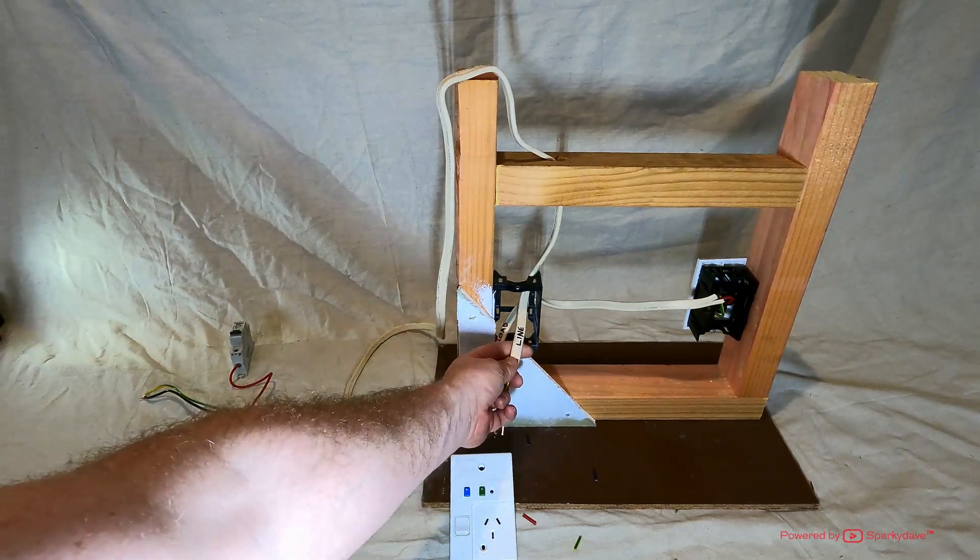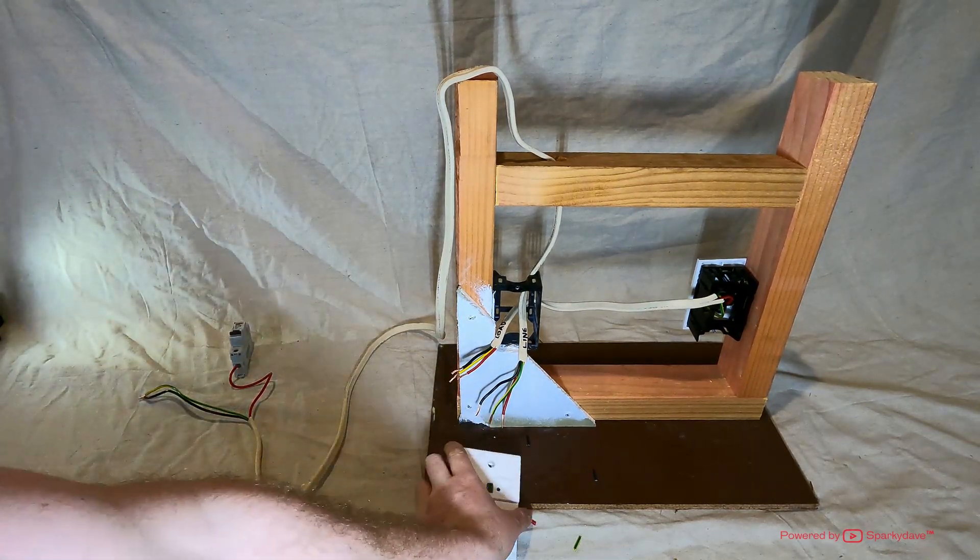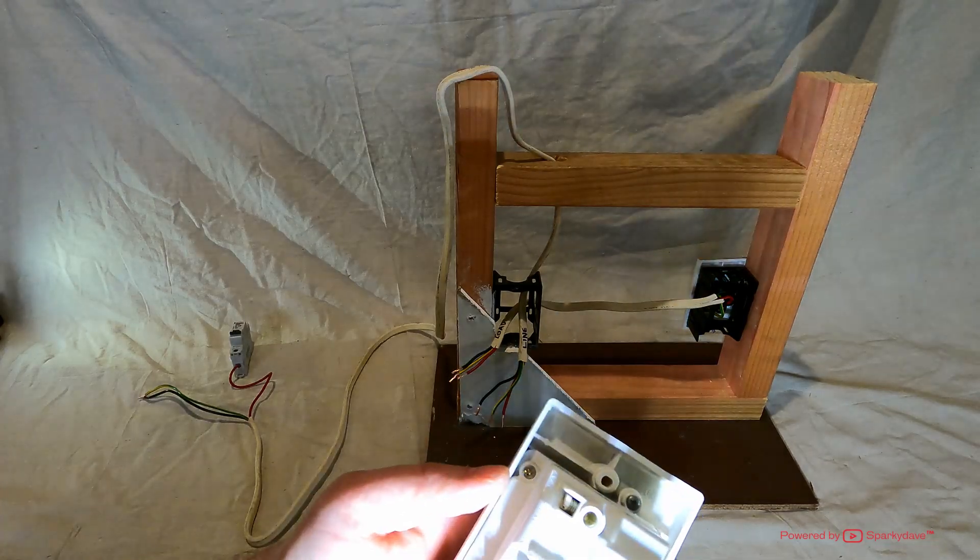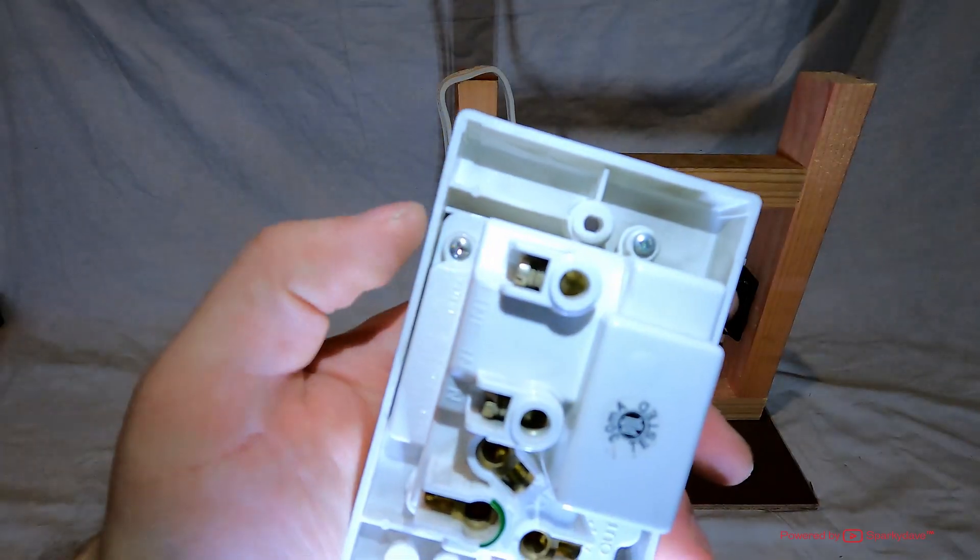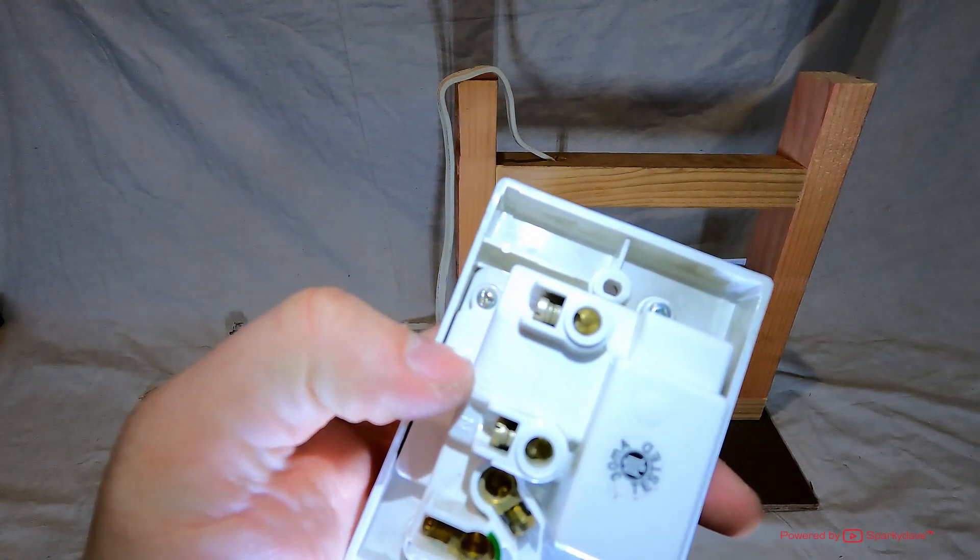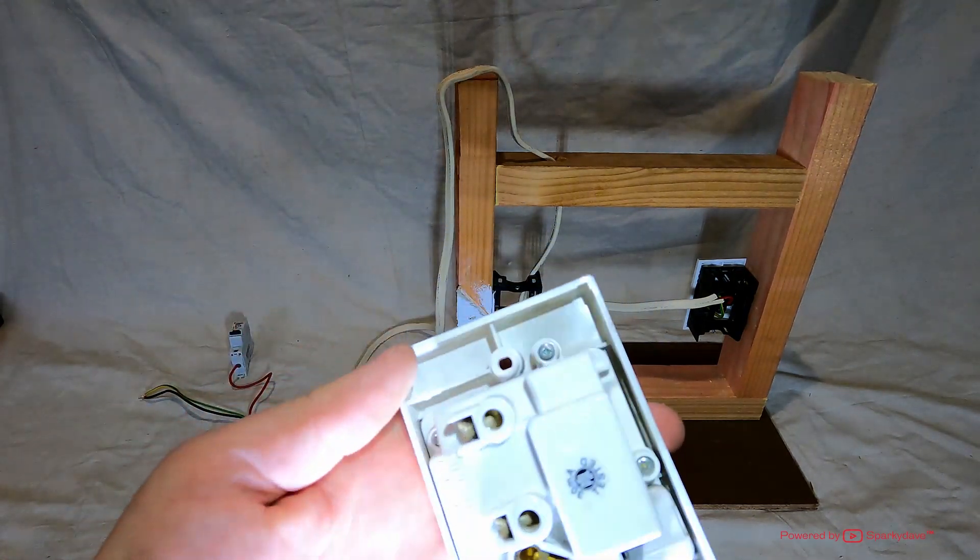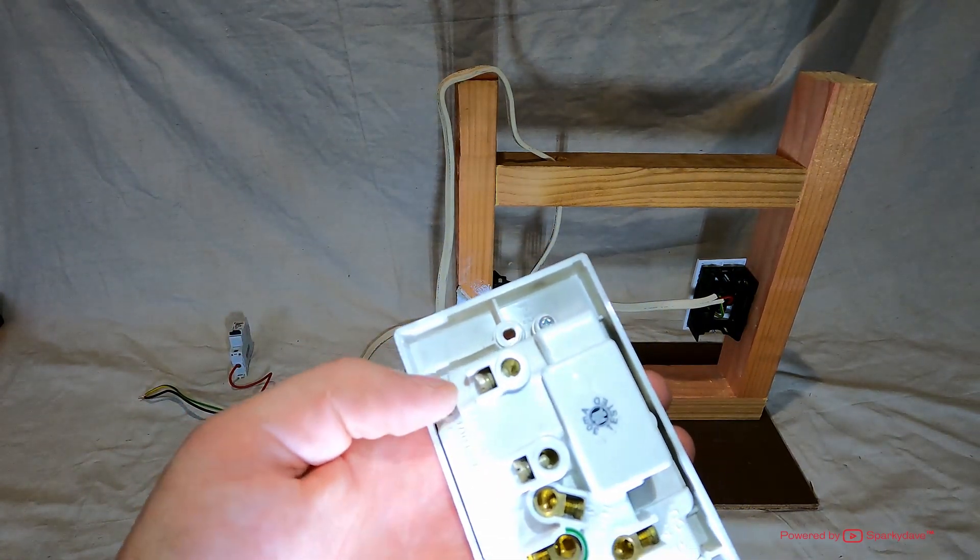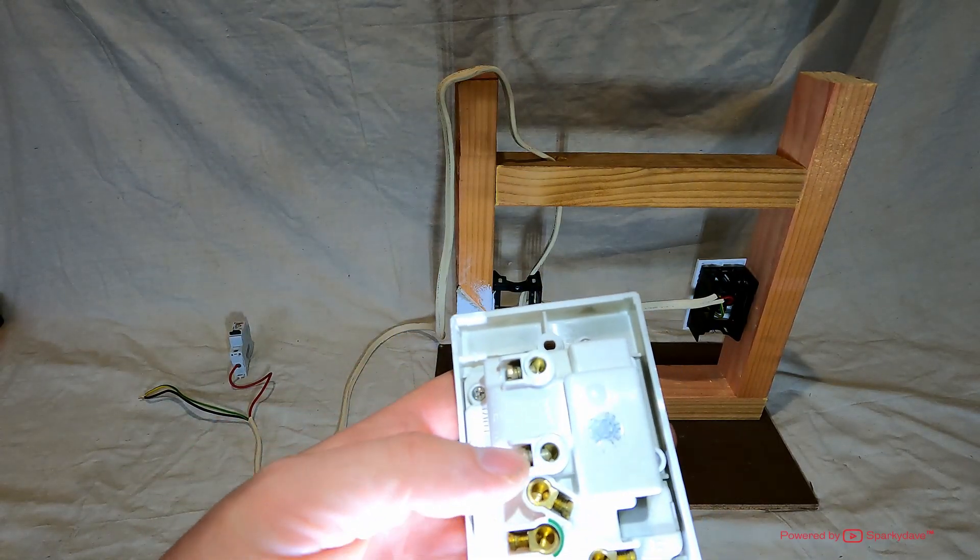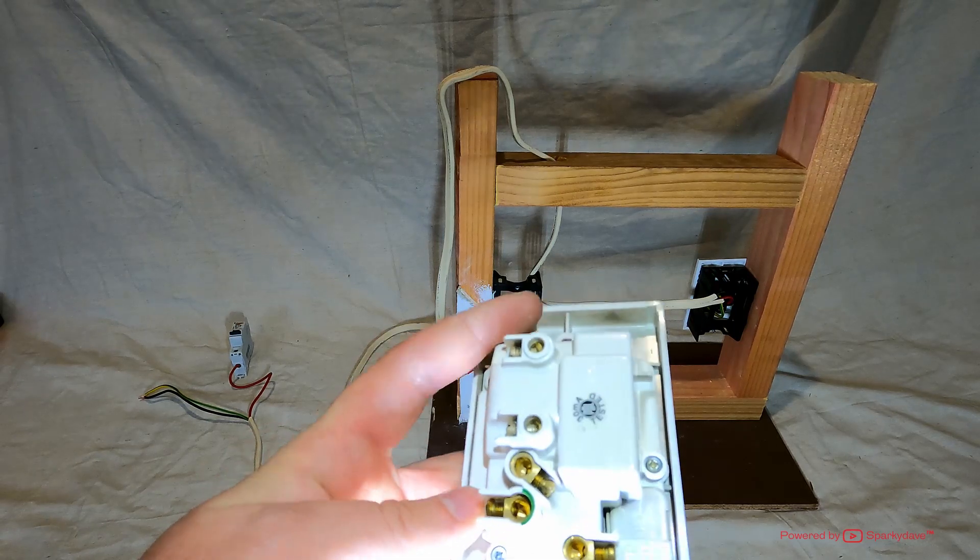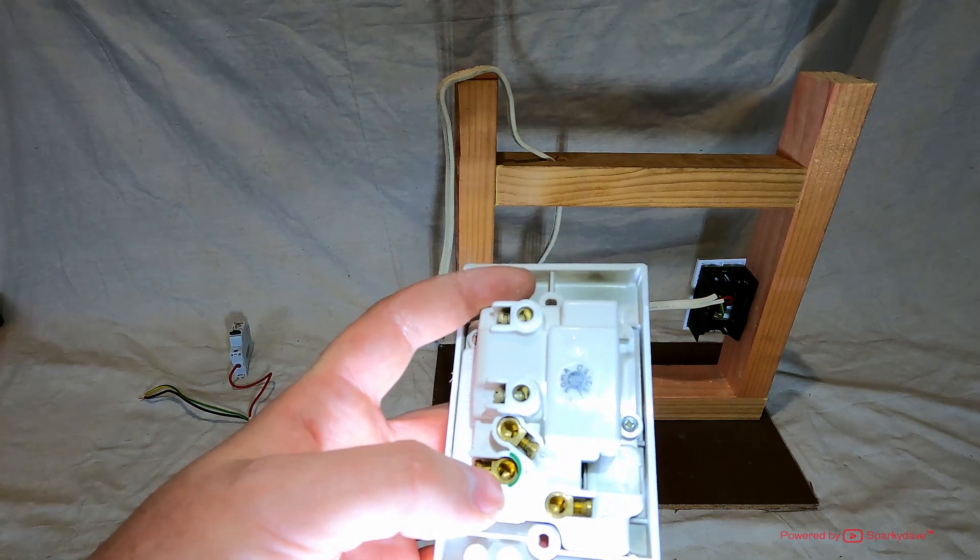The next step we're going to do is have a look on the back of the socket RCD. Now you'll be able to see there is a line in connection, which is the line side that we've just labeled, the one that goes back to the switchboard. The A, which is your phase, your red cable will be going in there. And the N is for the neutral cable.